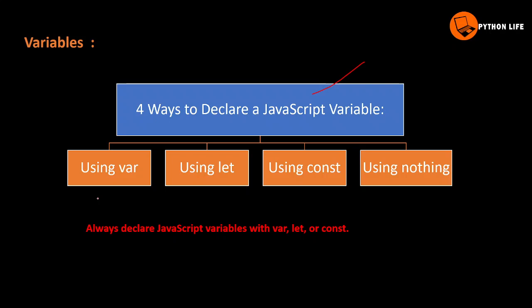It's about the VAR keyword. To declare variables, we use var, let, const, or nothing — these are 4 ways to declare variables. Always declare JavaScript variables with var, let, or const — that is good practice and good programming. Var, let, and const are better than using nothing.